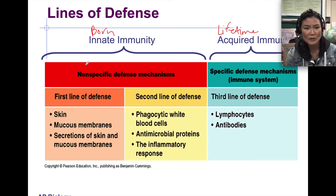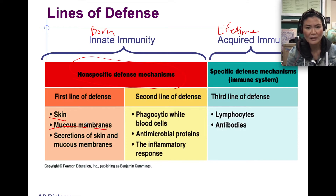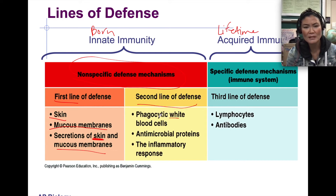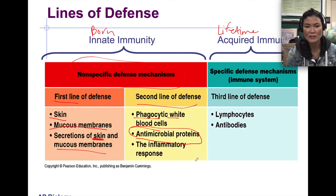Innate immunity involves non-specific defense mechanisms — how your body defends itself against pathogens. For example, your skin is a natural barrier against pathogens, and mucus membranes produce sticky mucus in your mouth and nose to protect against pathogens. Secretions of skin like oils, acids, and mucus membranes provide the first line of defense. The second line includes phagocytic white blood cells that patrol your body and engulf pathogens by phagocytosis, and antimicrobial proteins like the complement system.